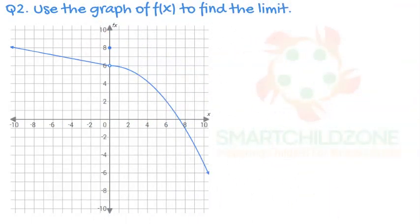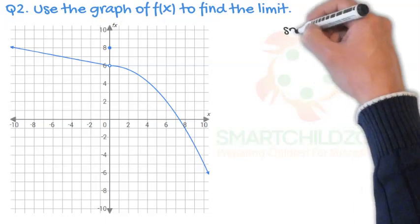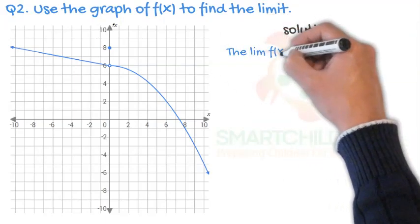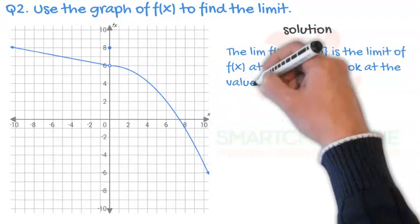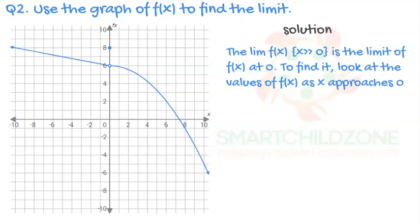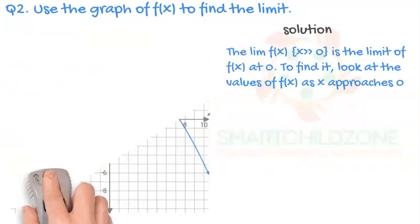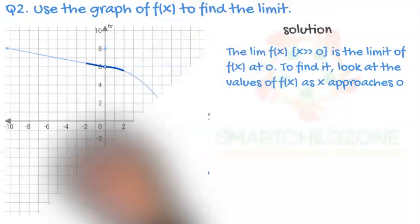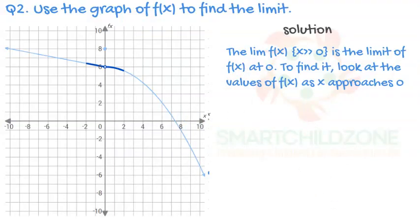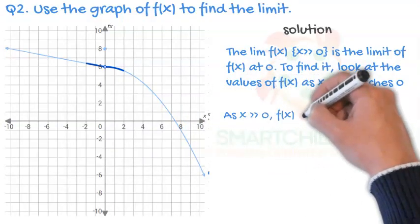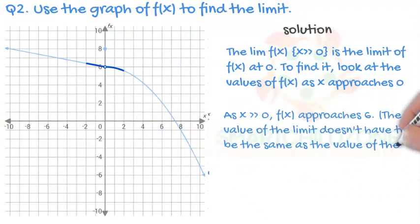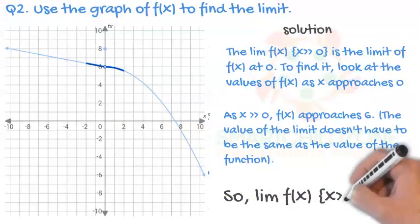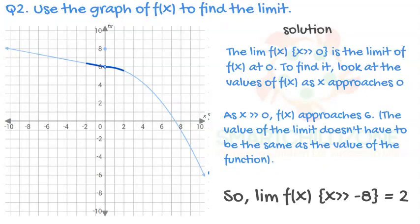Use the graph of f(x) to find the limit. The limit of f(x) as x approaches zero is the limit of f(x) at zero. To find it, look at the values of f(x) as x approaches zero. As x approaches zero, f(x) approaches six. The value of the limit doesn't have to be the same as the value of the function, so the limit of f(x) as x approaches zero equals six.